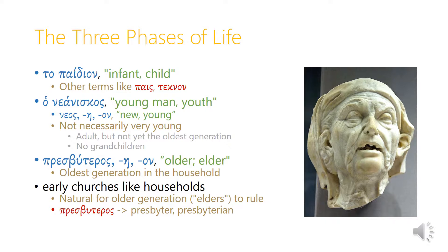Honneaniskos means 'young man' or 'youth,' and it's related to the adjective neos, nea, nean, which means 'new' or 'young.' But honneaniskos isn't necessarily a very young man — it can be an adult. The point is that honneaniskos is not yet the oldest adult generation. Usually honneaniskos has no grandchildren; this is the parent generation that might have children but isn't yet the oldest of the three phases of life.